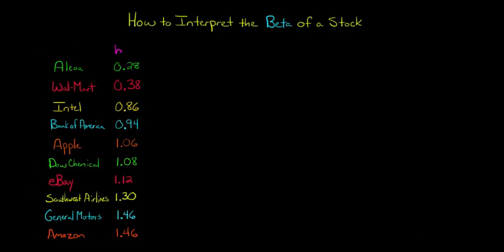So I've got the betas in this column right here, and you'll see for Alcoa, for example, an aluminum company, the beta is 0.28, whereas for Walmart, the beta is 0.38.